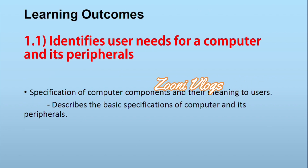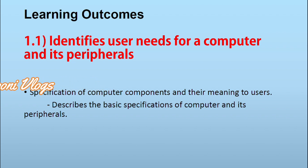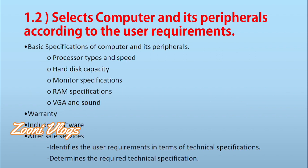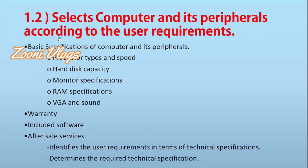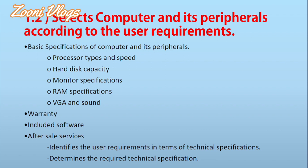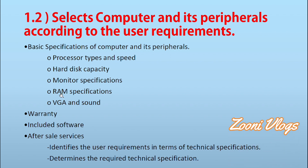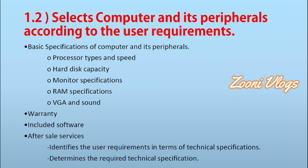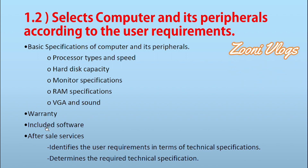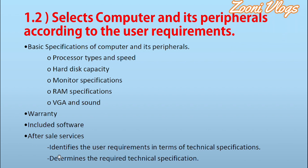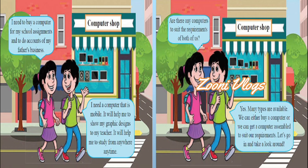Learning outcomes: from this lesson you will be able to identify user needs for a computer and peripherals, understand the specification of computer components and their meaning to users, describe the basic specification of computer and peripherals, and select a computer and its peripherals according to user requirements. Basic specifications include processor types and speed, hard disk capacity, monitor specification, RAM, VGA, and sound, warranty, included software, and after-sale services.